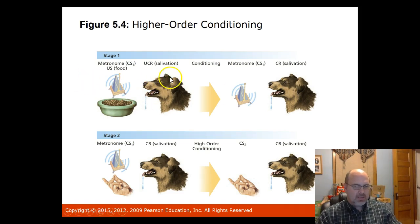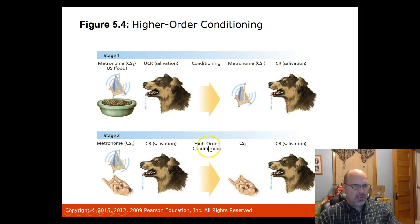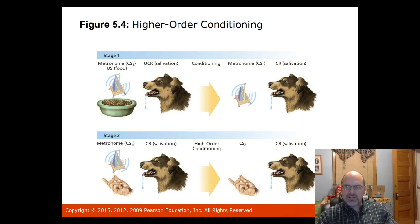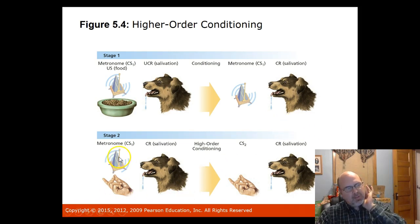Higher-order conditioning is where one conditioned stimulus is used to create another. In stage one, a strong salivation response is conditioned to the metronome (CS1). In stage two, finger snapping (CS2) is immediately paired with the metronome until the dog begins to salivate to the finger snapping alone. The pairing of the metronome and finger snapping eventually led to the snapping alone causing salivation.